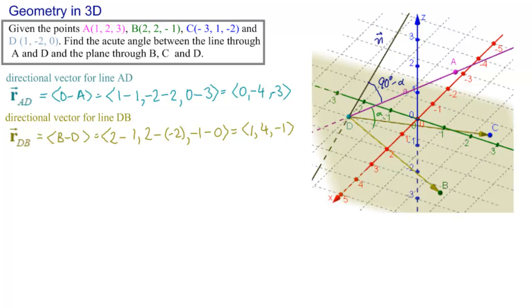We need the directional vector for DC. So we have C minus D. Write down C(-3, 1, -2) minus D(1, -2, 0). So -3 minus 1 is -4, 1 plus 2 is 3, and -2.